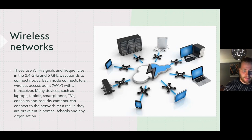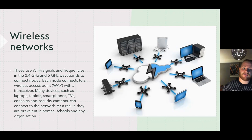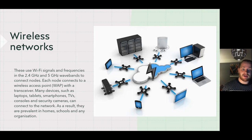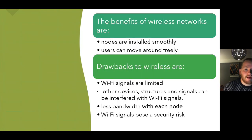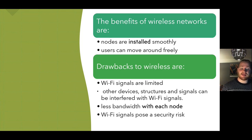Wireless networks use Wi-Fi signals to connect nodes with frequencies in the 2.4 GHz and 5 GHz wave bands. Each node connects to the wireless access point with a transceiver. Many different devices such as laptops, smartphones, TVs, consoles, and security cameras can connect to the network. As a result, they are prevalent in homes, schools, and many organisations that value freedom of movement. The benefits are that nodes can be installed smoothly without interruption to the network, and users can move around freely and stay connected.